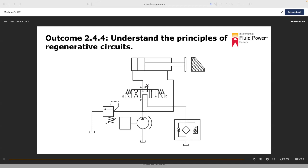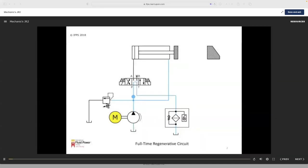A simple method of constructing a full-time regenerative circuit is shown in the illustration. The circuit shown doesn't use the directional control valve B port, but instead connects the rod end port directly to the pump pressure line. For regeneration to work, the rod end area must be smaller than the cap end.